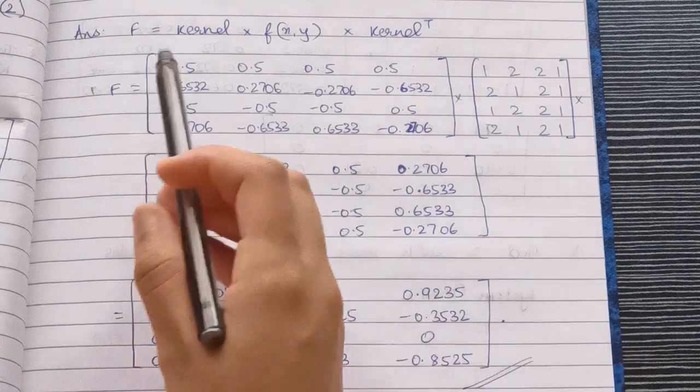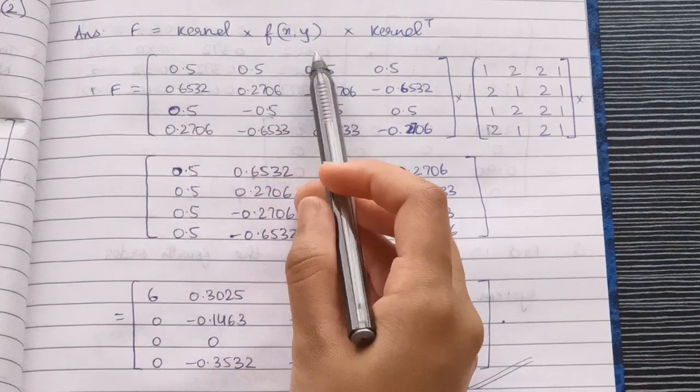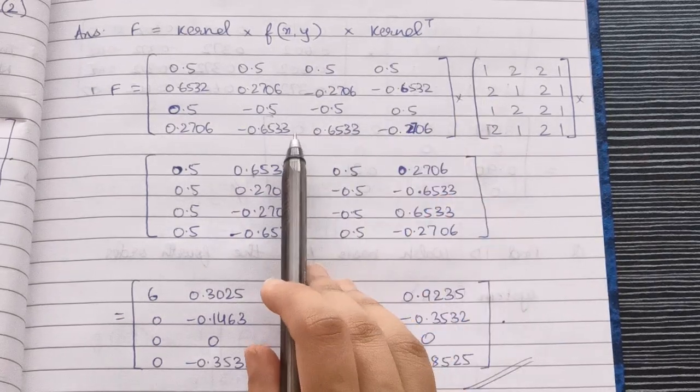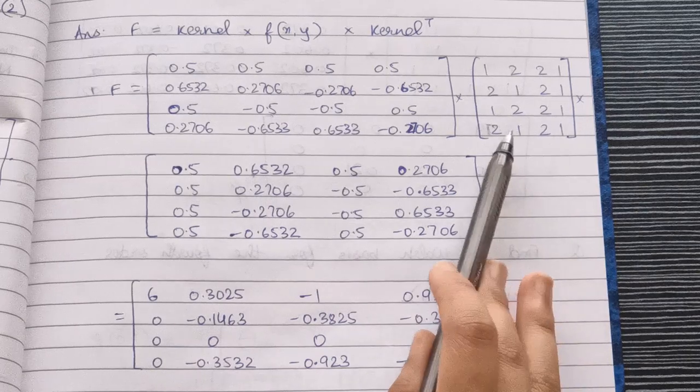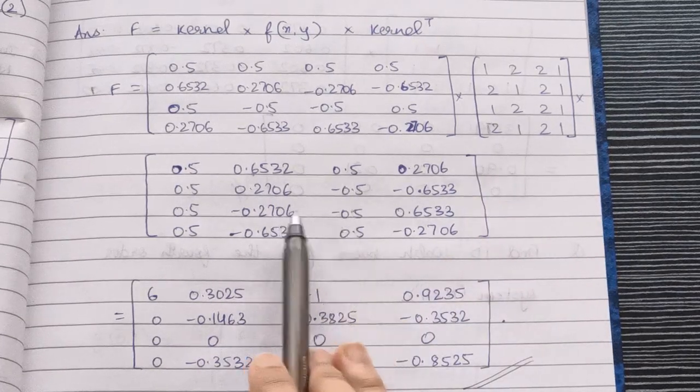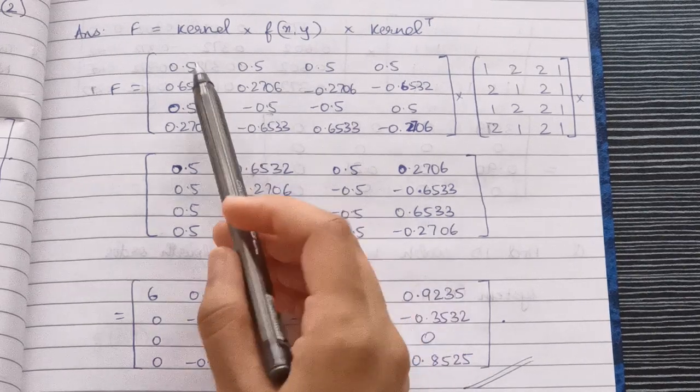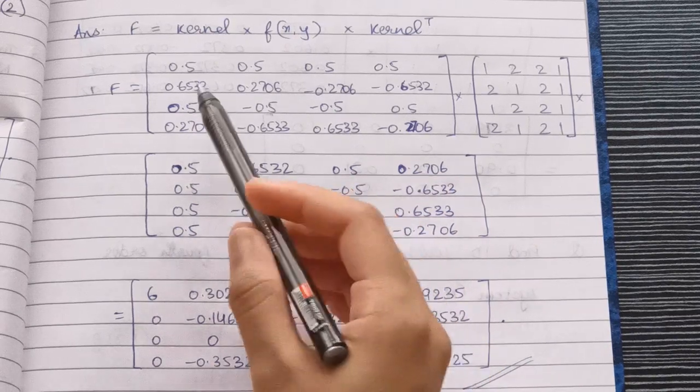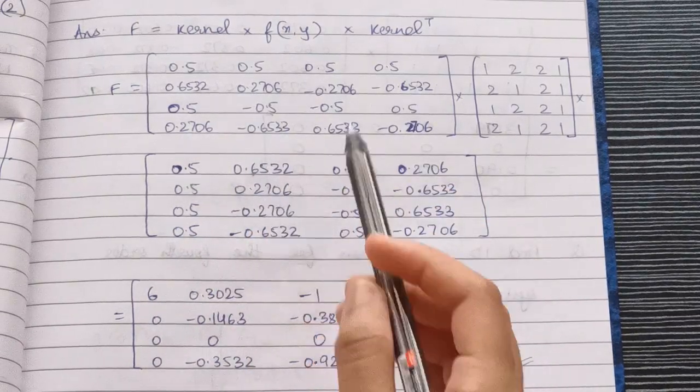Once we solve this, we use the formula kernel × f(x,y) × kernel^T. We take the kernel and then the input image, and then we take the kernel transpose. Here we're just interchanging the rows and columns. This row we write down as a column here, the second row as a column here, and so on.